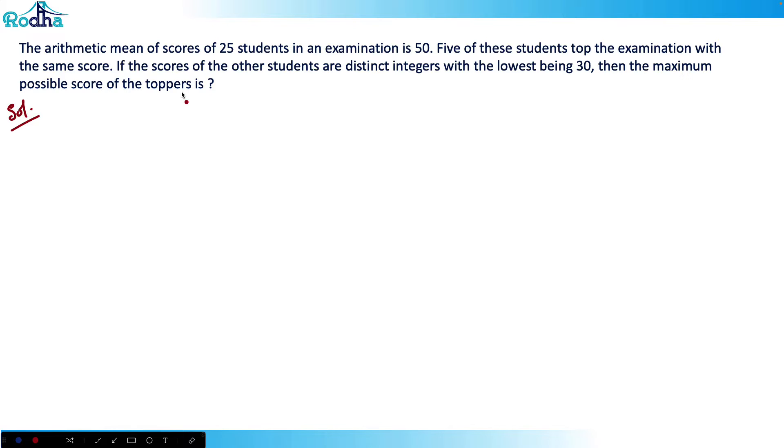What I'm thinking here is that arithmetic mean of scores of 25 students in an examination is 50. I can see that the total sum will be how much. So what is average? Average is equal to sum upon n, right? Now total sum will be equal to average into n. So average is given as 50, and this arithmetic mean is simple average only.